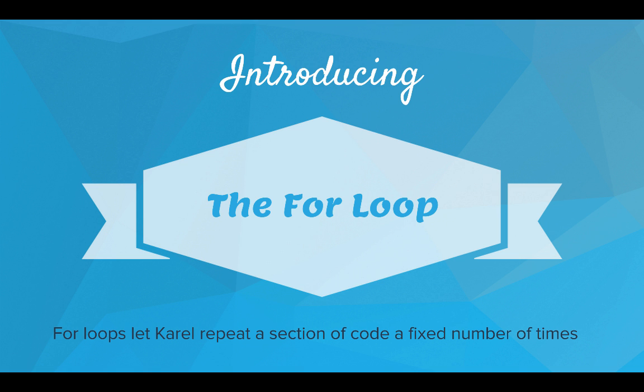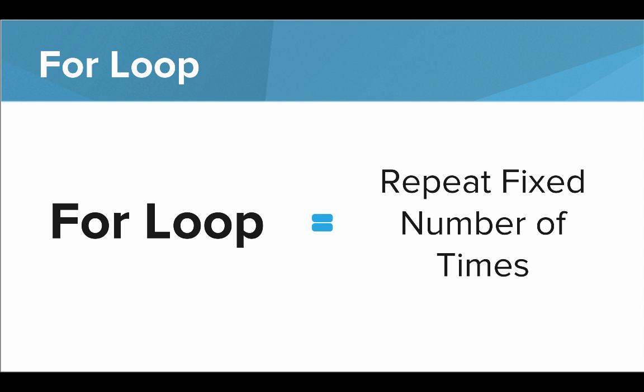Introducing the for loop. The for loop lets Carol repeat a section of code a fixed number of times. So when you think for loop, think repeat fixed number of times. If you want to do something 10 times or a thousand times, you can use a for loop.